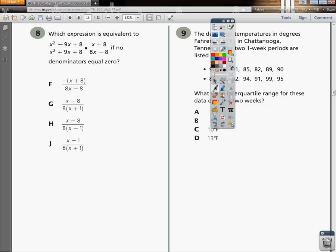The no denominators equal 0 thing means you're not going to get any undefined weirdness where you're dividing by 0. So we can just assume that everything works out great and perfect. So what we're going to do first is sort of factor the first group.